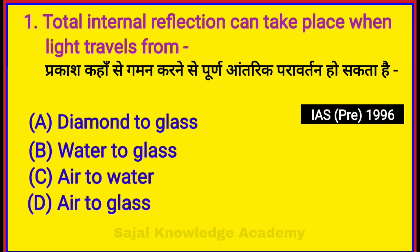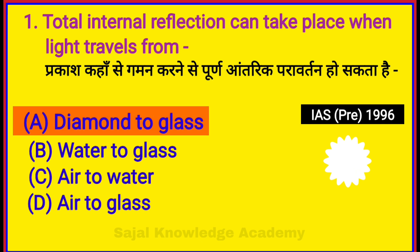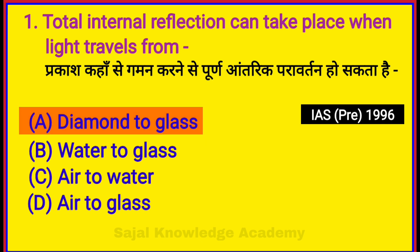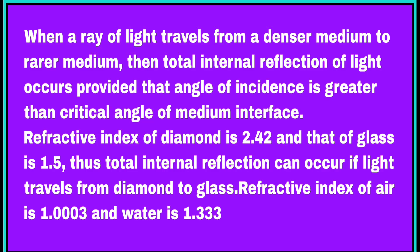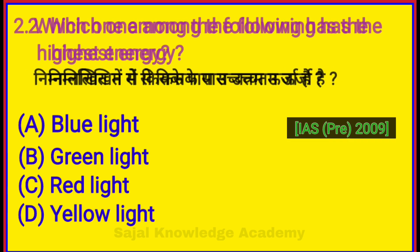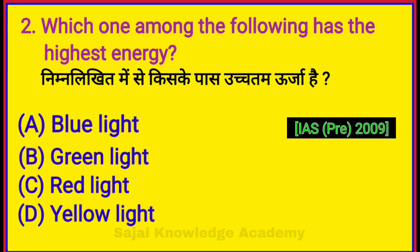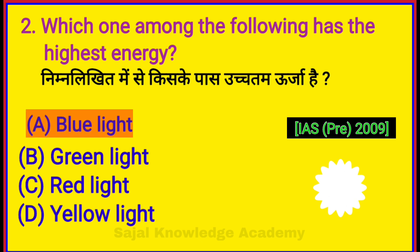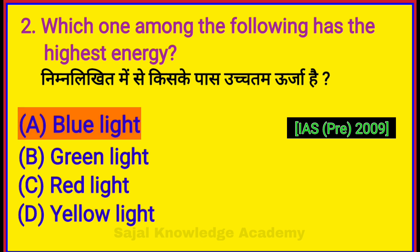Total internal reflection can take place when light travels from — Option A: Diamond to Glass. Which one among the following has the highest energy? Option A: Blue Light.